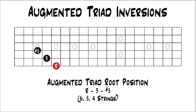This lesson I want to dedicate just to augmented inversions, because as you probably remember from a previous lesson, I mentioned that they're unique because they're a symmetrical chord. If you don't remember what symmetrical means, it just means that all the intervals in that chord are the same distance apart. In augmented triads, they're a major third apart.